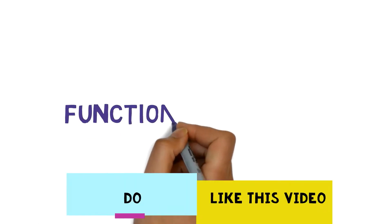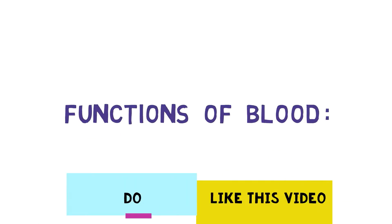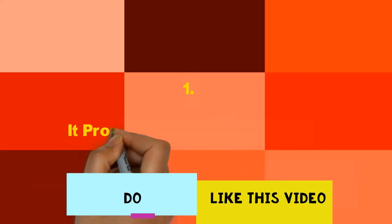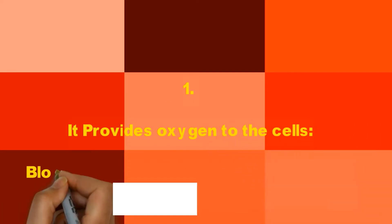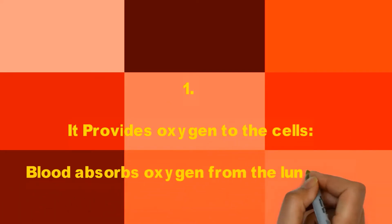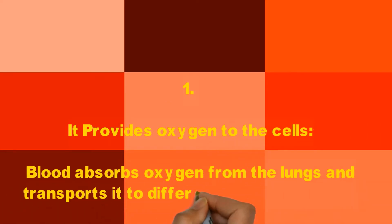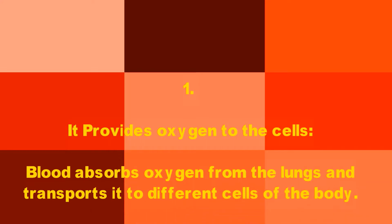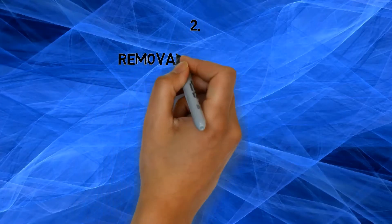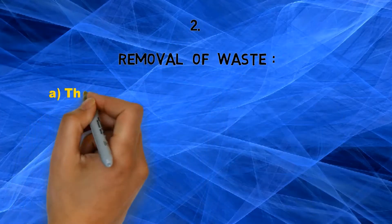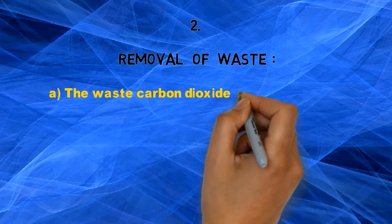Blood is responsible for many body functions. First, it provides oxygen to the cells — blood absorbs oxygen from the lungs and transports it to different cells of the body.